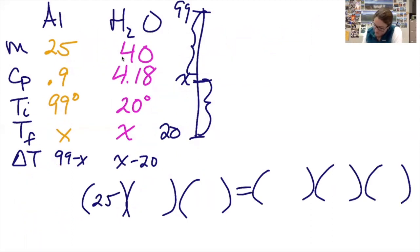25 grams of aluminum, specific heat 0.9, change in temperature 99 minus x. 40 grams of water, specific heat 4.18, change in temperature x minus 20.